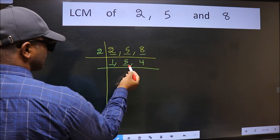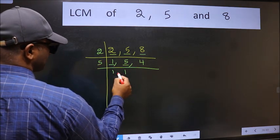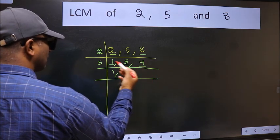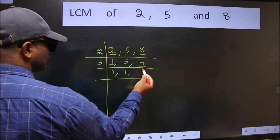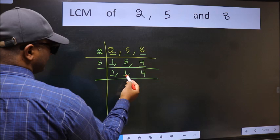So focus on the next number 5. 5 is a prime number so 5 wants 5. The other number 4 not divisible by 5 so you write it down as it is. Now we got 1 here and here.